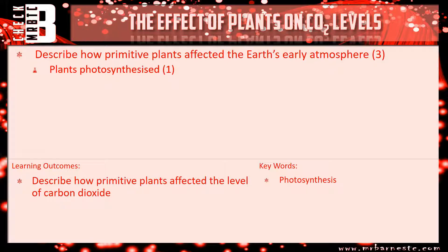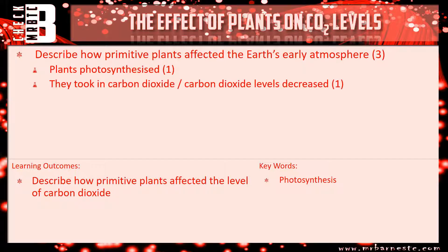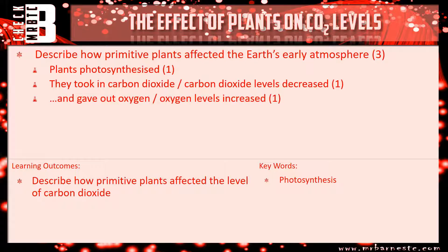For your second mark: what effect did photosynthesis have? Carbon dioxide levels went down, or the plants took in carbon dioxide. For your third mark: what did they produce? What's going to affect the atmosphere is oxygen — so they gave out oxygen, or oxygen levels increased. You could have talked about glucose, but that wouldn't have got you any marks because the question asks what effect it had on the atmosphere.